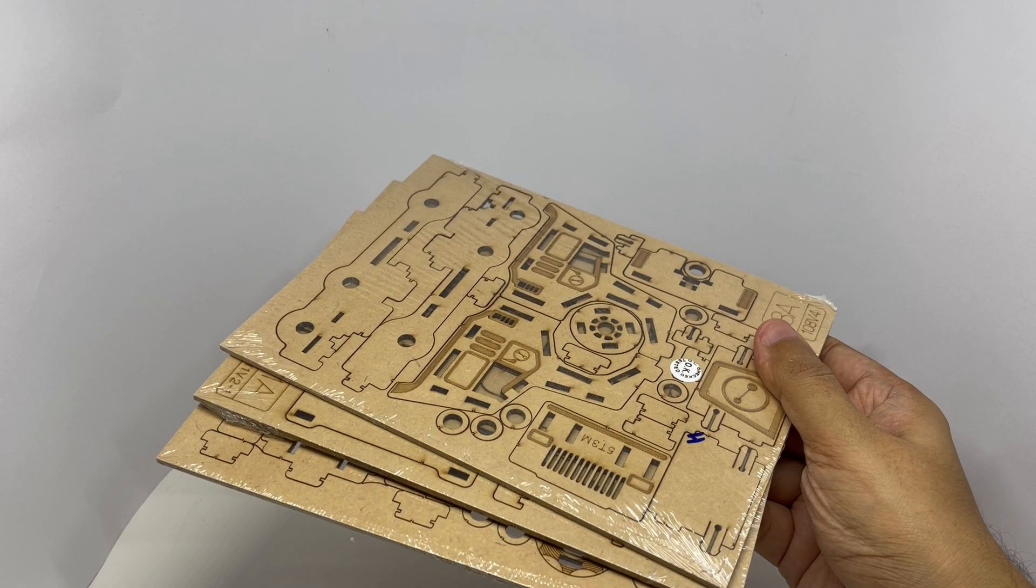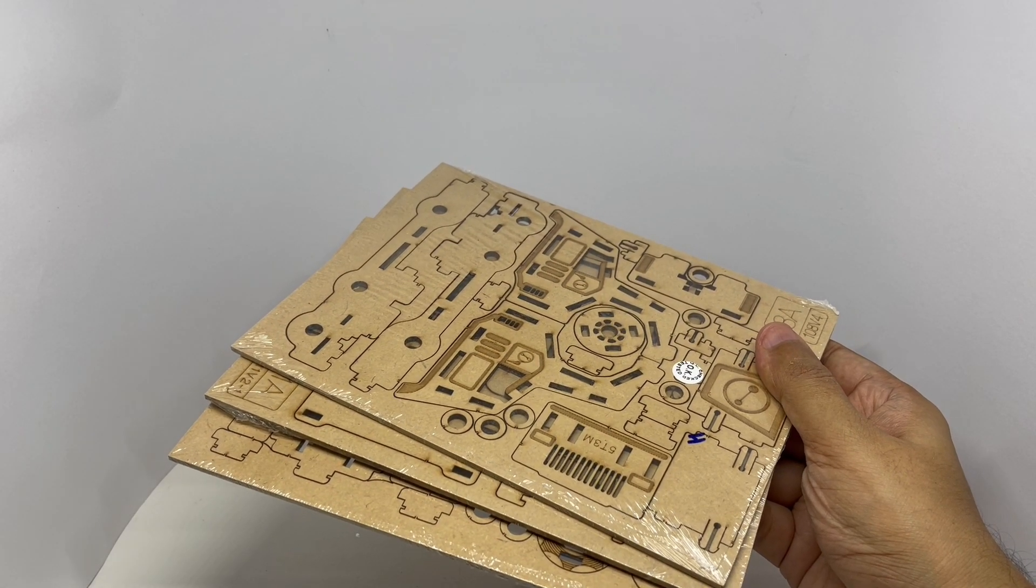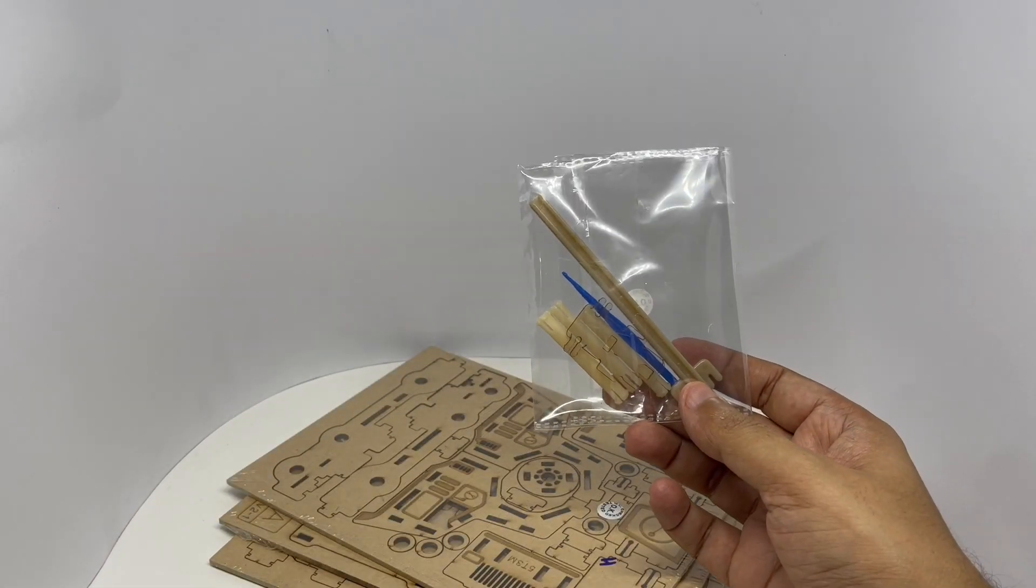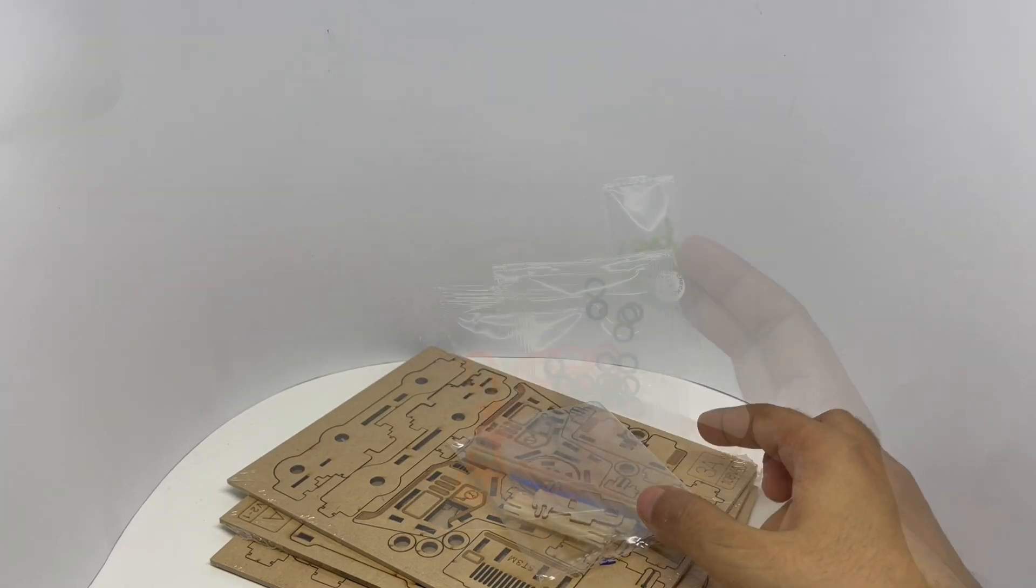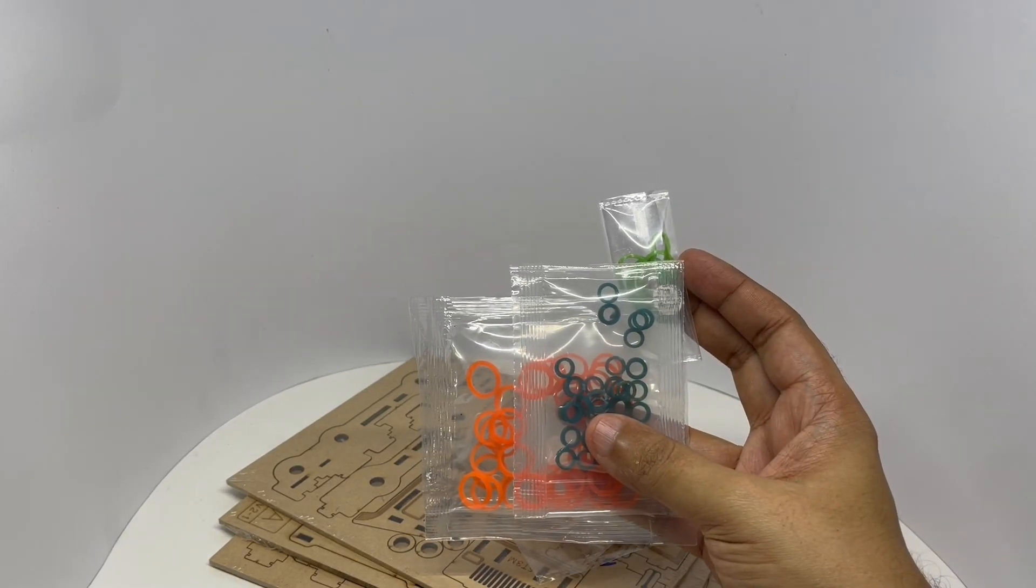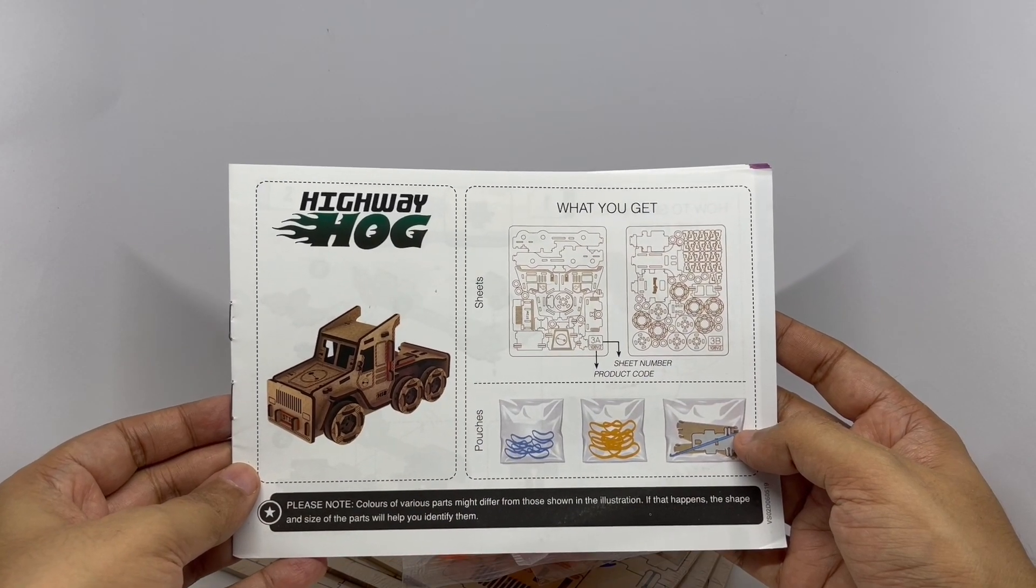You get three sheets of pre-cut wood, you get the things for the launcher, three sets of rubber bands, and you get an instruction booklet.